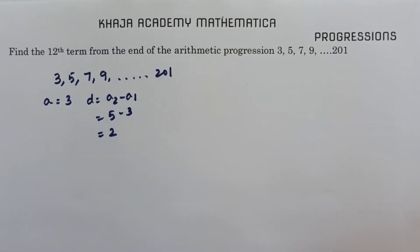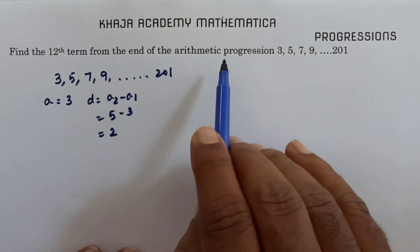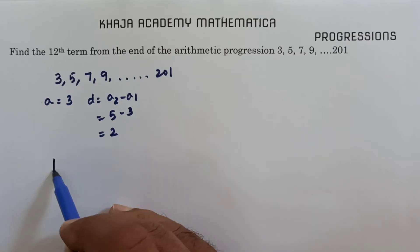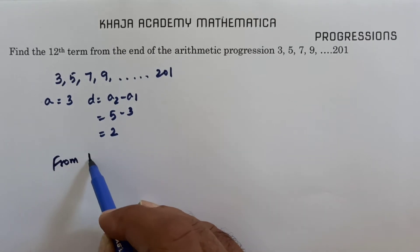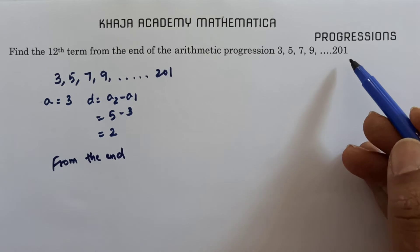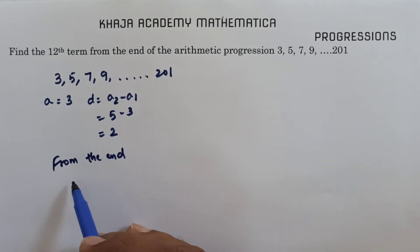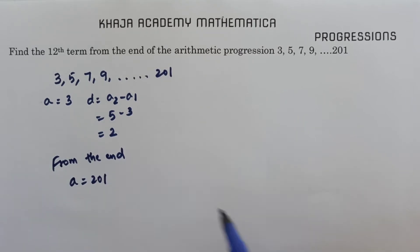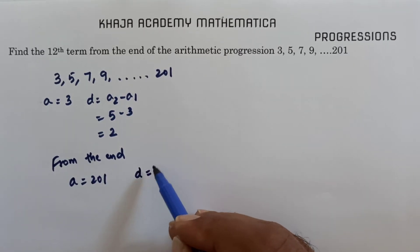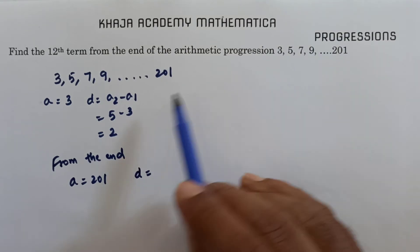The common difference is 2. Now I need to find the 12th term from the end. When working from the end, if we start the series from here, the first term will be 201, and the common difference will be minus 2 because we are going in reverse.